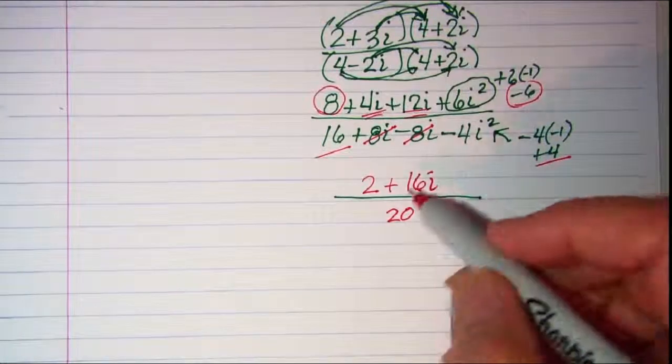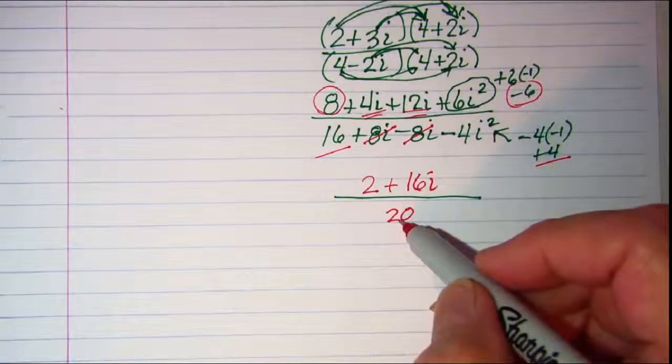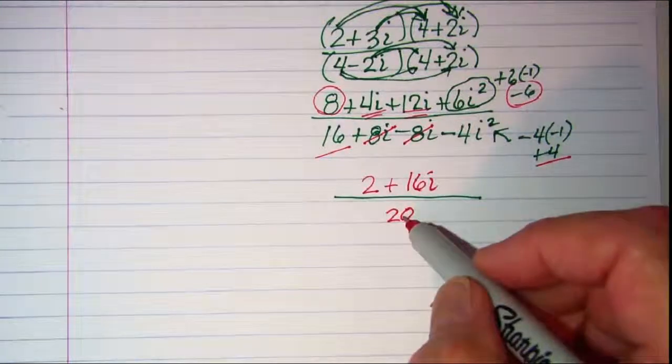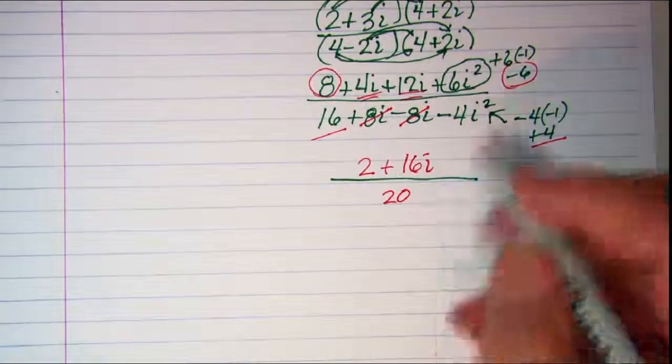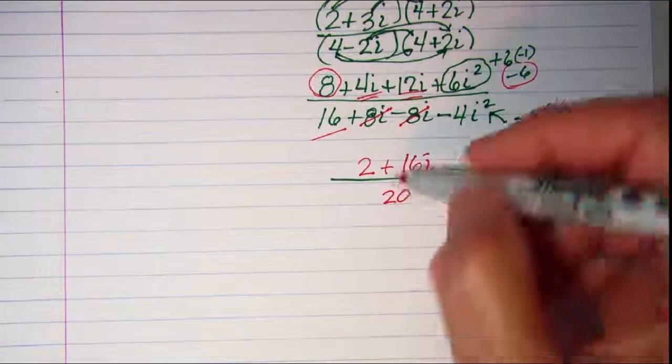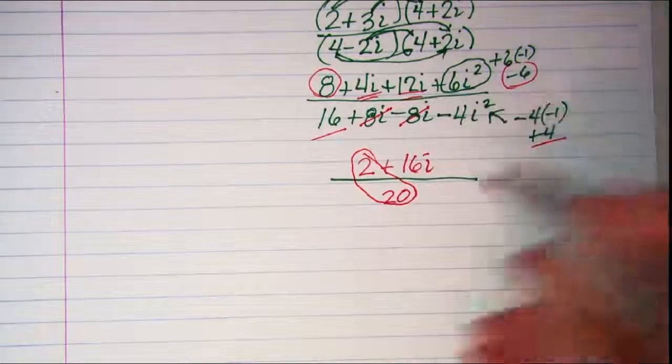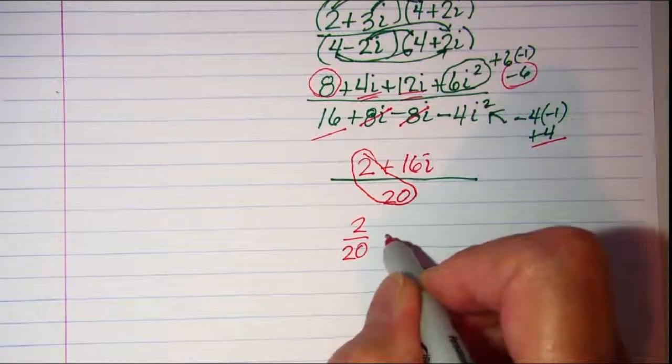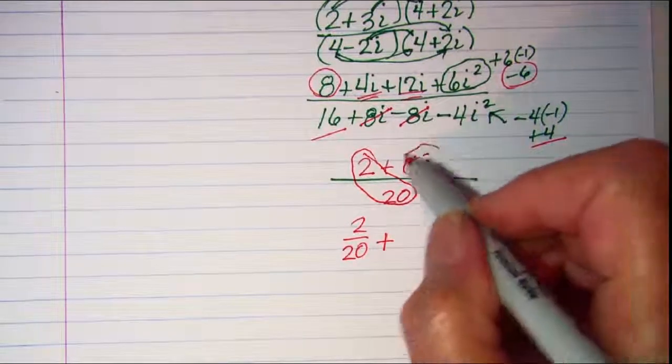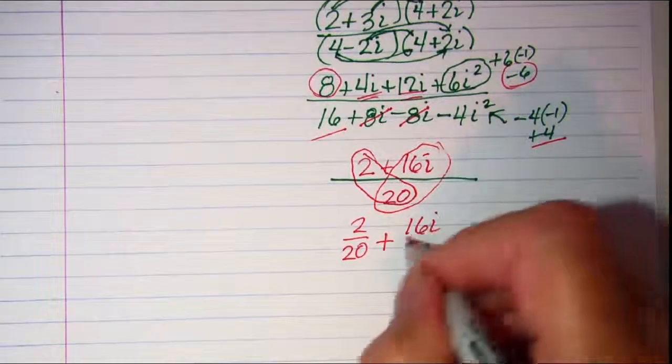Alright, I see that I have a common factor of 2 in all three of my terms. Usually when I'm simplifying a complex number like this I'd like to break it into two pieces. So one piece is 2 over 20 and then the other piece is 16i over 20.